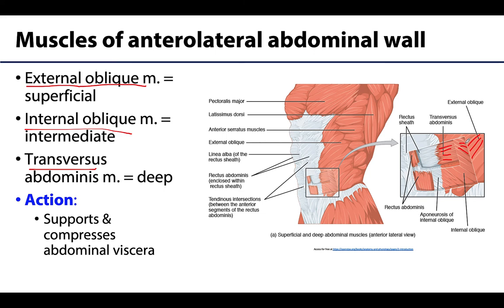The anterior lateral abdominal wall muscles contribute to lateral flexion — like an oblique crunch moving to the side — as well as trunk flexion. However, one of their most important roles is to support and compress the abdominal viscera, the deeper organs associated with the abdomen, when needed.